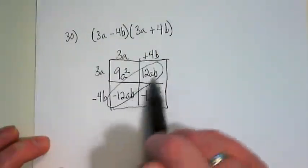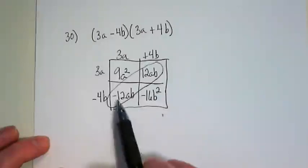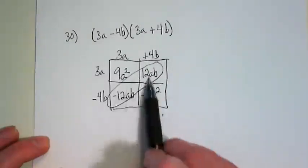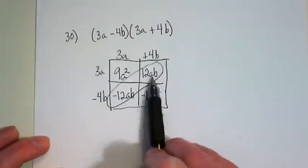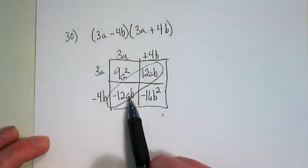What that does here is it creates a like term that zeroes out, because negative 12 as a coefficient is the opposite of positive 12, and these are like terms because they're both a times b.